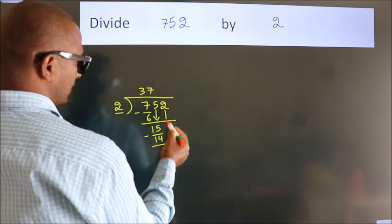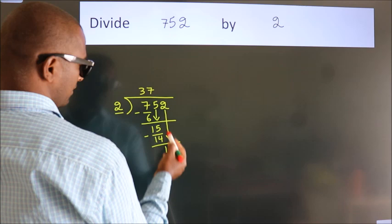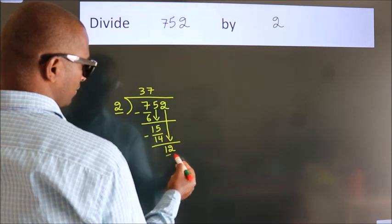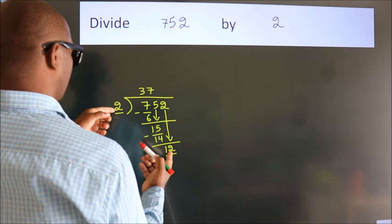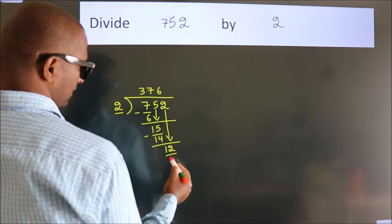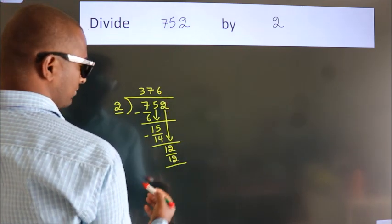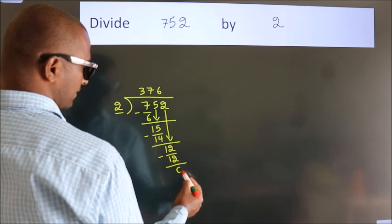After this, bring down the beside number. So, 2 down. So, 12. When do we get 12? In 2 table, 2, 6, 12. Now, we subtract, we get 0.